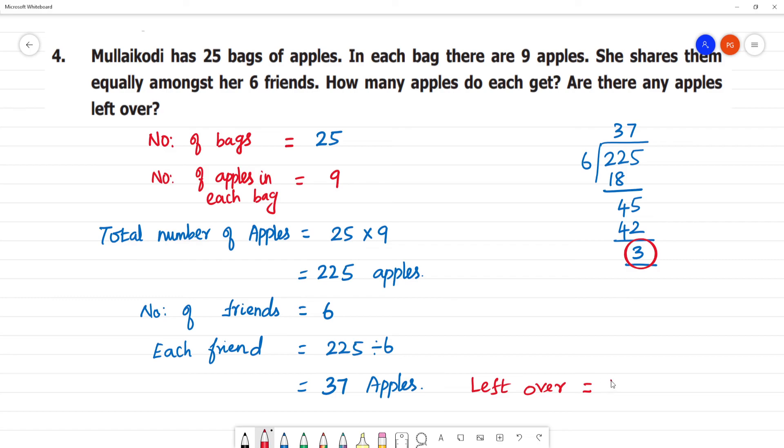Left over apples will be 3 apples. Clear? First multiplication, then division.